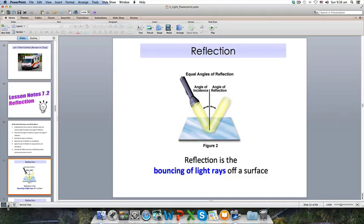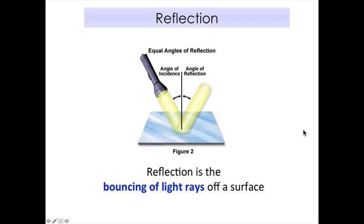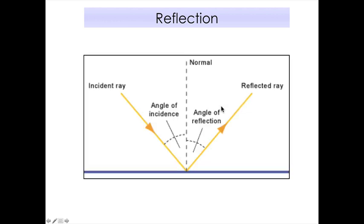Reflection is the bouncing of light rays off a surface. This is not the best definition, but it is sufficient for now. If you look at the torchlight here, it shines and creates an angle, and this angle will be the same angle on the other side — this is called the angle of reflection. So it bounces off, and we can say that this light has been reflected.